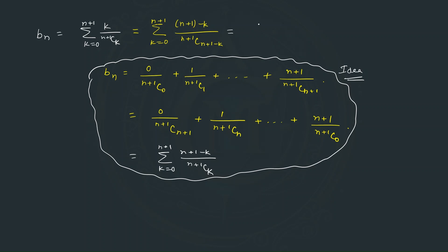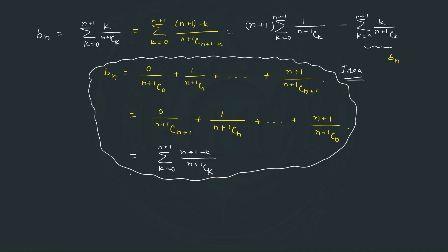Breaking this series gives (n+1) times summation of 1 over (n+1)Ck from k equal to 0 to n+1, minus the summation of k over (n+1)Ck from k equal to 0 to n+1. This second part is nothing but bₙ itself. Taking bₙ to the left side gives 2bₙ equal to (n+1) times aₙ, so bₙ equals (n+1)/2 times aₙ.